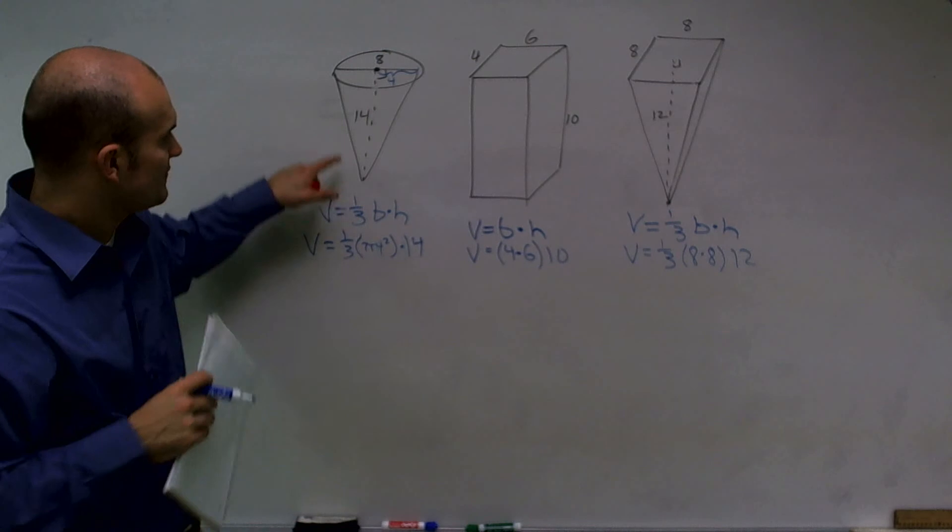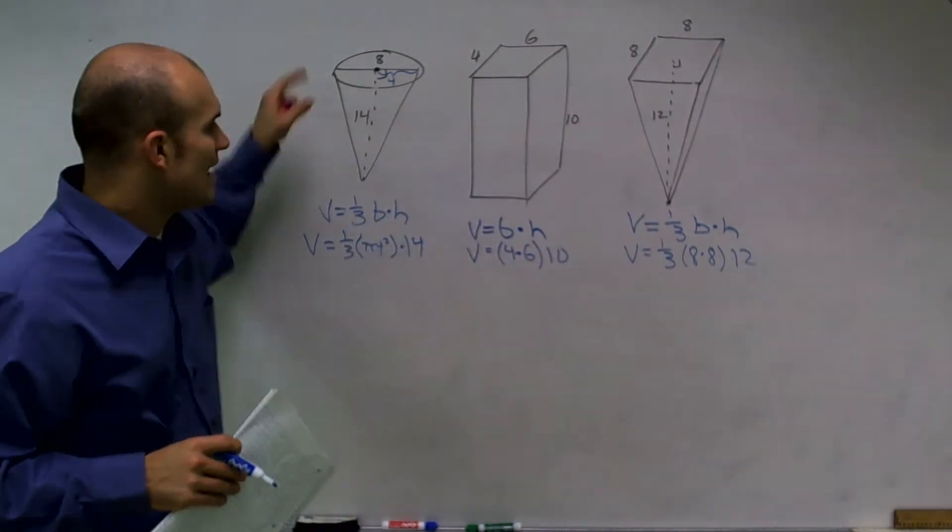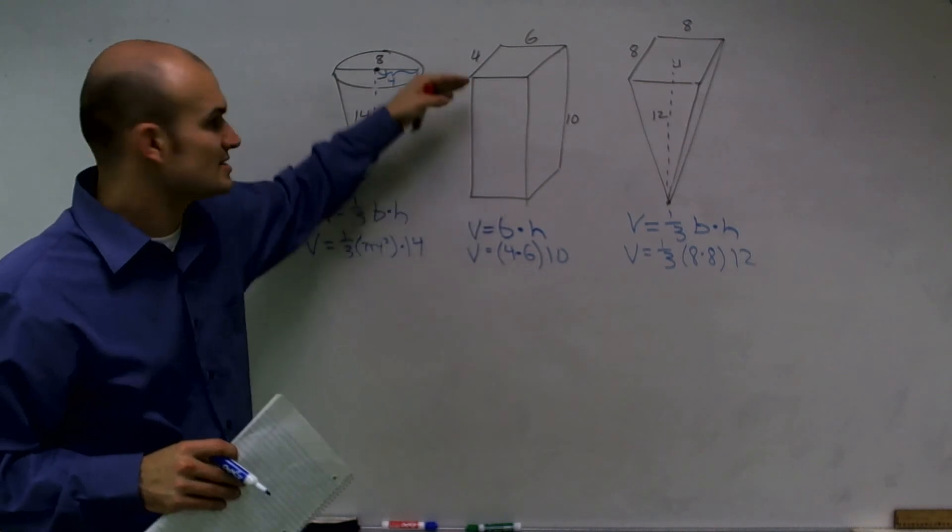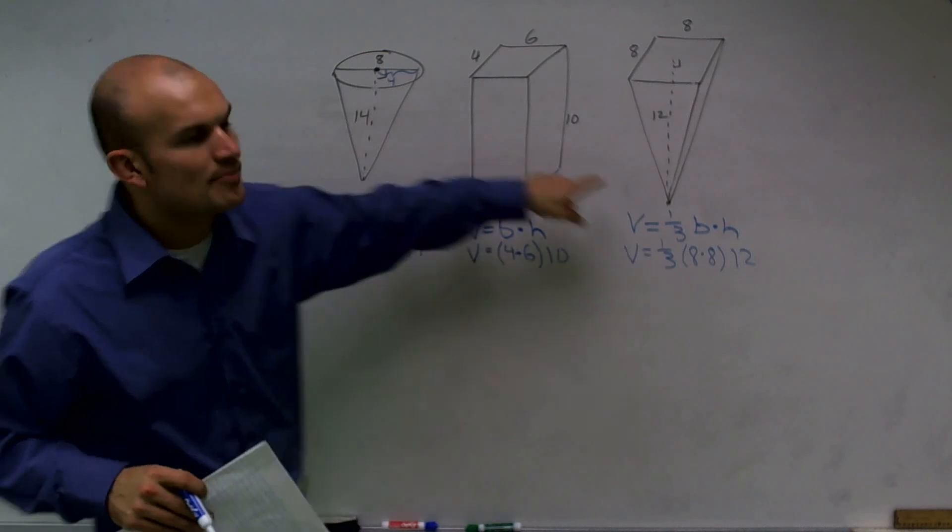Now, the reason why these two are different, if you notice, they focal down on a point. So their volume is going to be different than this one, because this is just your base extended. However, these two focal on a point, so their volume is one-third times base times height.